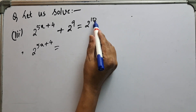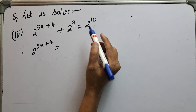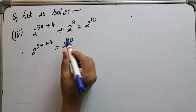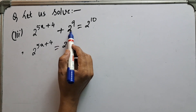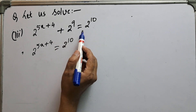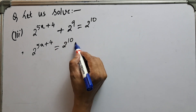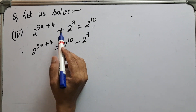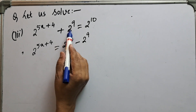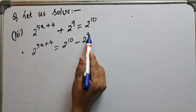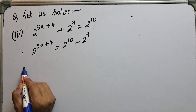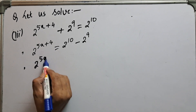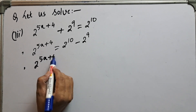We copy 2 to the power 5x+4 as it is. On the right hand side we already have 2 to the power 10, copied as it is. Now when we take plus 2 to the power 9 to the right hand side it becomes minus 2 to the power 9. So: 2 to the power 5x+4 equals 2 to the power 10 minus 2 to the power 9.